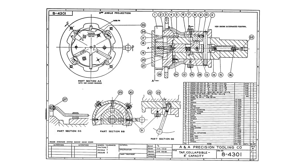Let's go back to this drawing from our first video and pick part 27, which is just a nut. Part 27 is located on this section view labelled Section CC, and part 27 is the only bit of detail provided on this part section. So the sole purpose of this section is to show part 27. Section CC is this section up here.